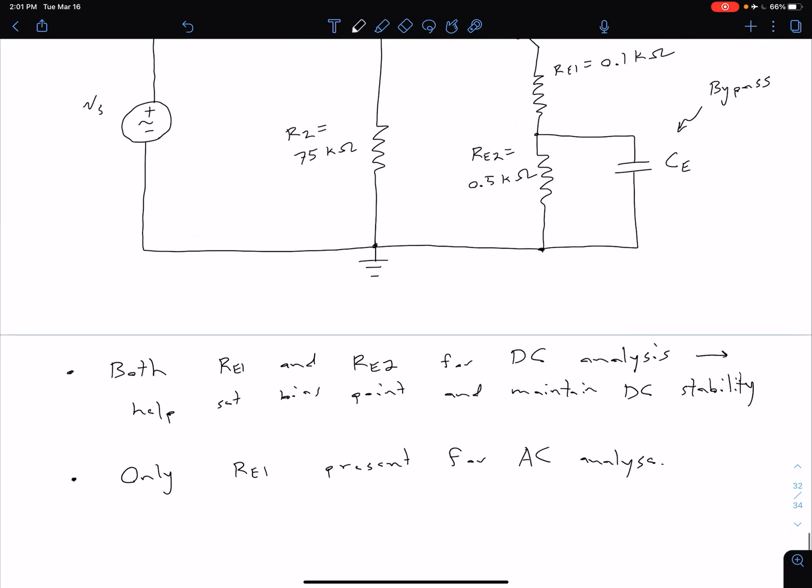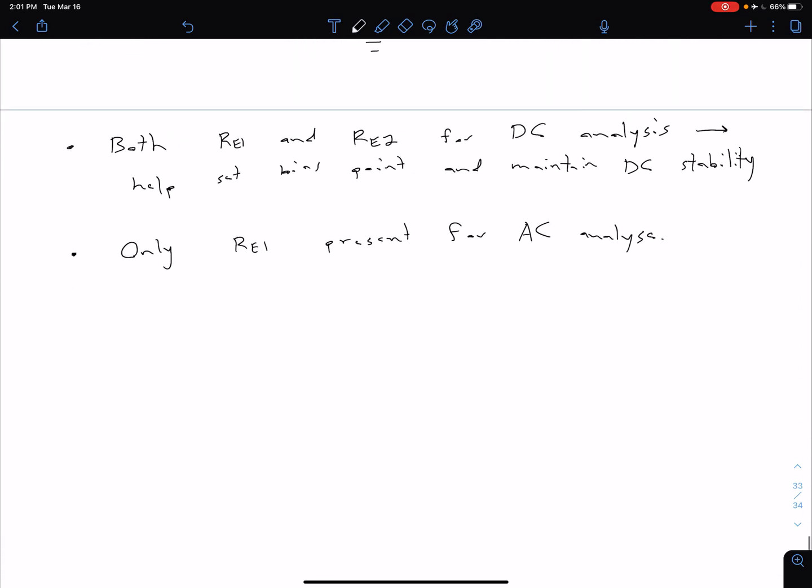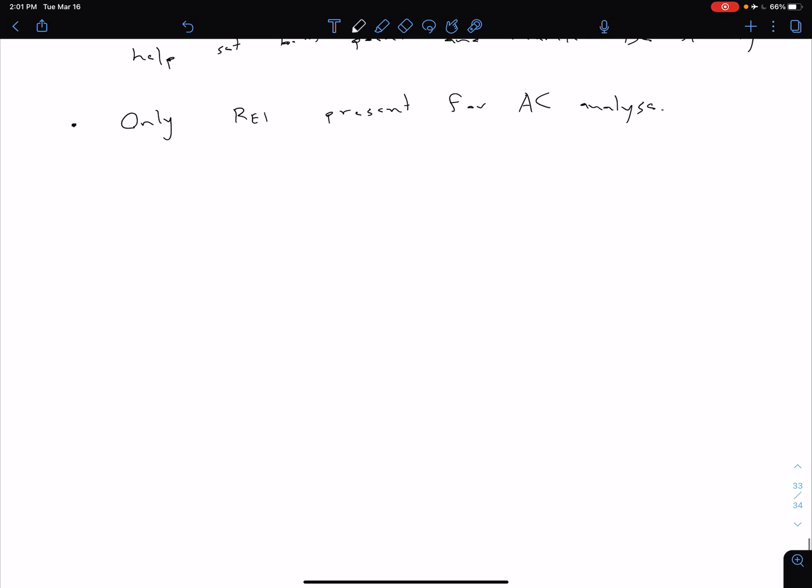To get an idea numerically of what that is, I've got some of the highlights for the DC analysis shown in the notes. The big one that we looked at was the end result of our ICQ. So that's the only one I'm going to include here, and we see that that is 0.418 milliamps.